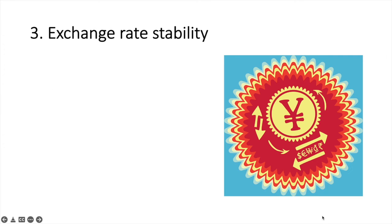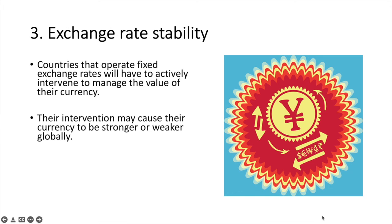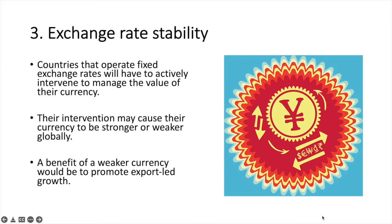The third objective is exchange rate stability. Countries that operate fixed exchange rates will have to actively intervene to manage the value of their currency. Their intervention may cause their currency to be stronger or weaker globally. A benefit of a weaker currency would be to promote export-led growth. Countries operating a freely floating exchange rate would also prefer to avoid wild swings in the value of their currency, as it creates a more stable international trading environment.